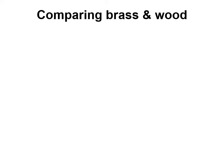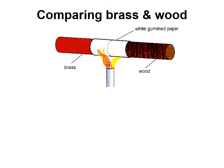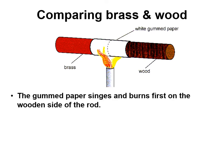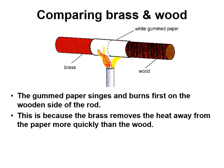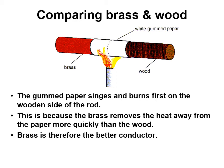You can also compare different materials, such as brass and wood. White gum paper is placed on both. The paper on the wood side burns first, because brass — being a metal — conducts heat away from the hot end quickly, whereas wood is a good insulator and keeps the heat concentrated, causing the paper to combust. This shows that brass is the better conductor and wood is the better insulator.